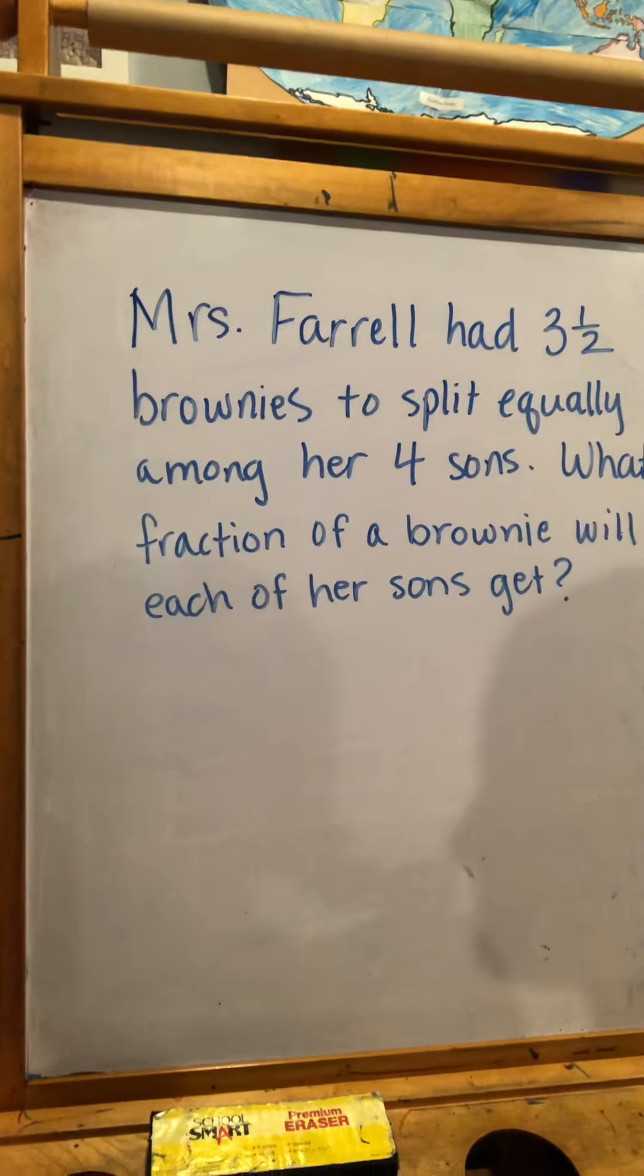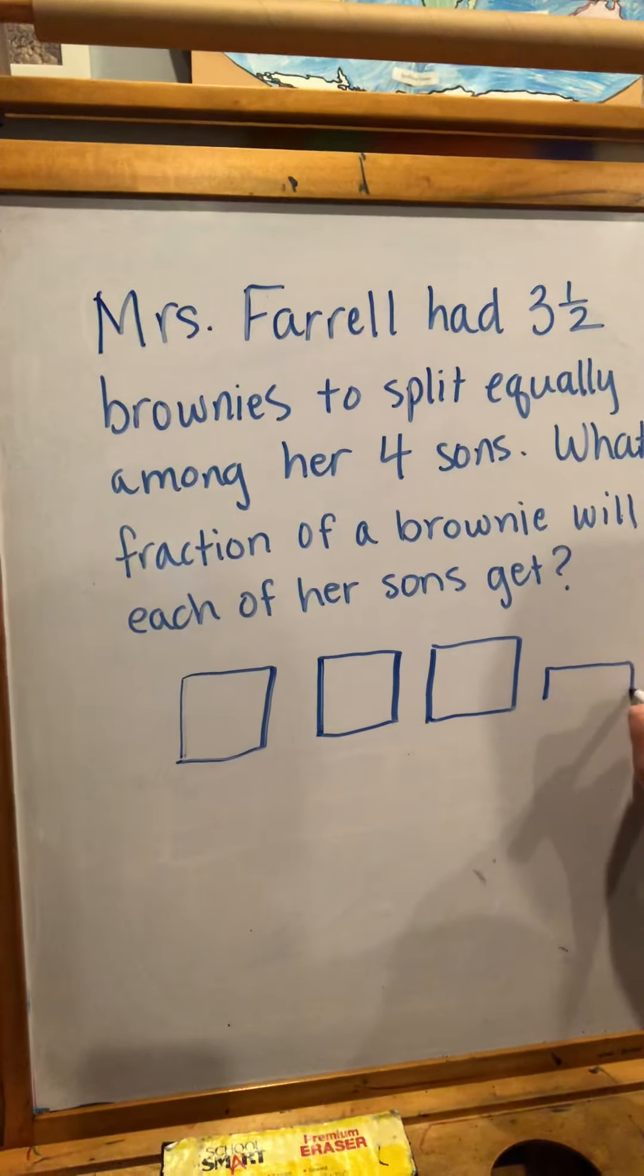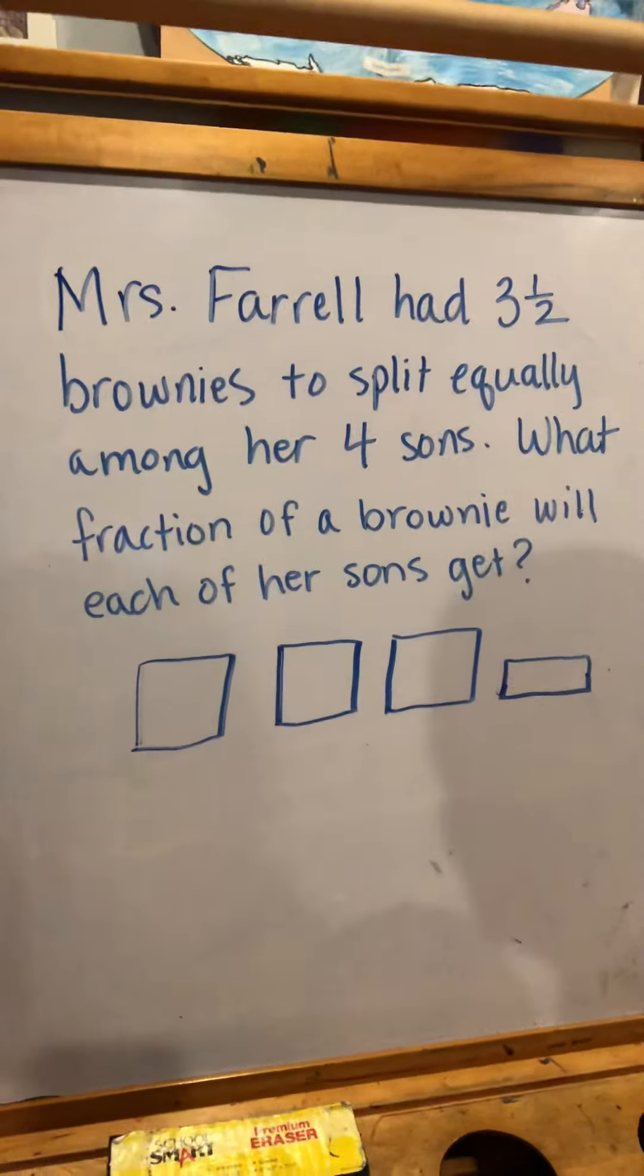As I was thinking about this, I was picturing the brownies in my head and how I could divide each brownie up into four. I'm going to share that strategy with you. I'm going to draw my four brownies. This is what I was thinking about in my head. It's three brownies and then a half, so I'm going to make sure that I only draw a half for that last one.